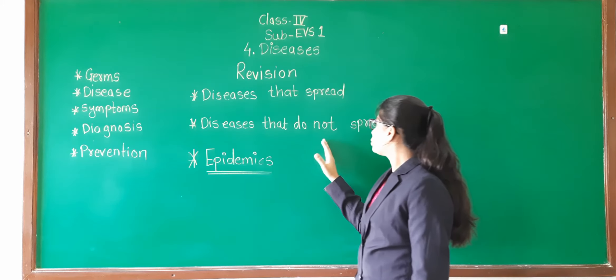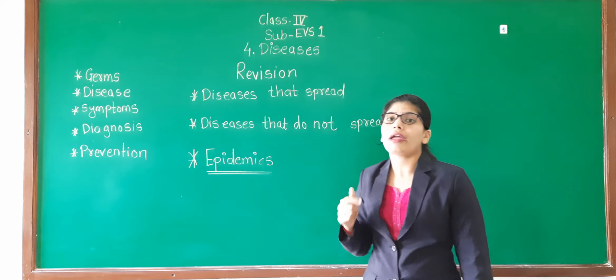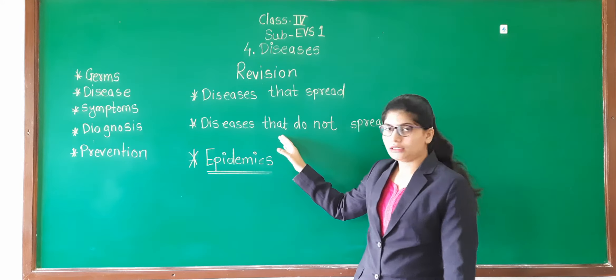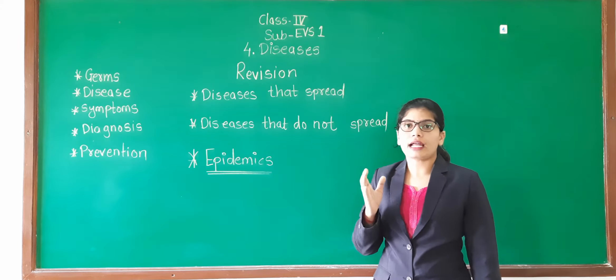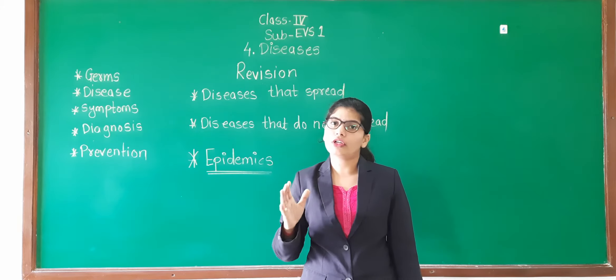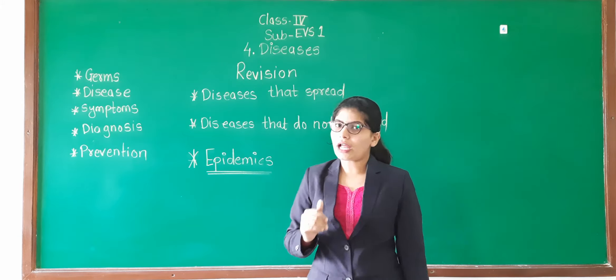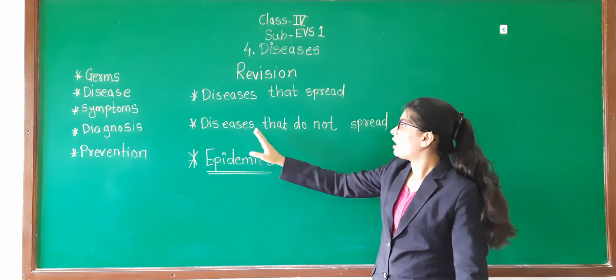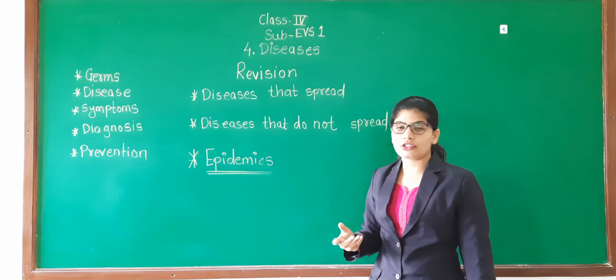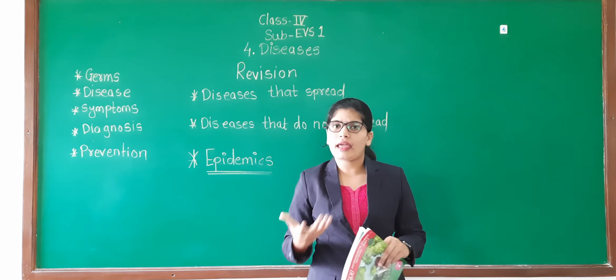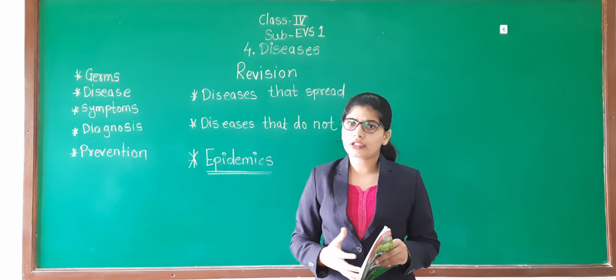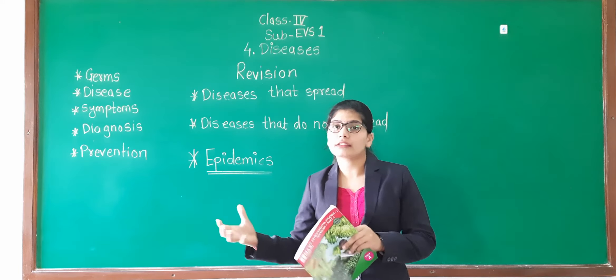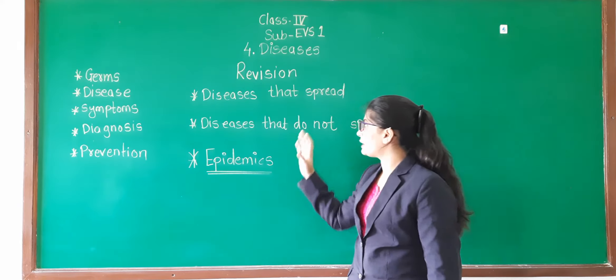Then we have learned diseases that do not spread. Means there is no air medium, water medium, touching or insects. Diseases that do not spread means what? Diseases that happen because of the lack of nutrients in your diet. So that we have learned in prevention. Diseases that spread, that prevention also we have learned. Diseases that do not spread, there are also prevention that you have to eat balanced diet, then exercise, eat plenty amount of water. So many preventions are given. Then vaccination, avoid this, avoid the collection of stagnant water. So like that we have completed our prevention.